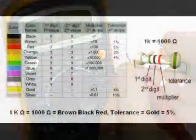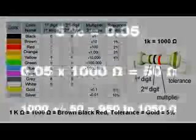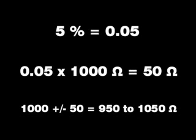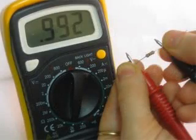Remember, the tolerance is given by the fourth band. In this case, it is gold, which means 5%. 5% equals 0.05. 0.05 times a thousand equals 50. So this resistor's resistance should be within 1,000 plus or minus 50 ohms, or 950 to 1,050 ohms. So the resistor in this picture is within tolerance. Is yours?